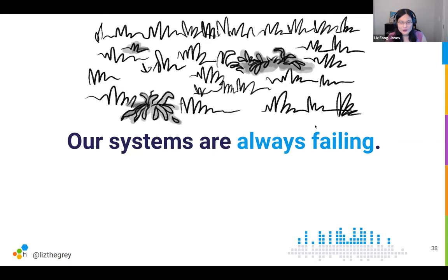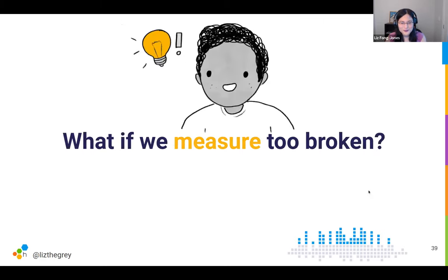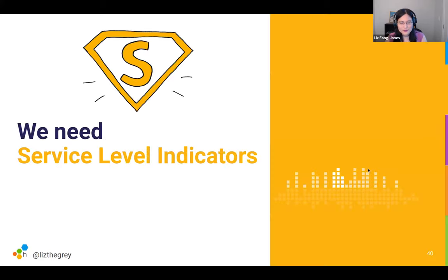Why did I say 'too broken' rather than just 'broken'? Because our systems are always failing — there's always some microscopic way in which they are broken. We wouldn't expect every single blade of grass on our lawn to be green, so why do we expect every query to succeed? All that matters is that the lawn is green enough for us to send our kids or dog to play. Let's think about applying that to our services by measuring 'too broken' — this is the concept from site reliability engineering called the Service Level Indicator or Service Level Objective.